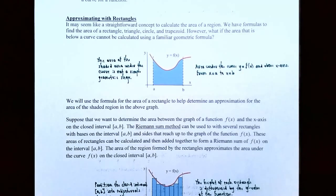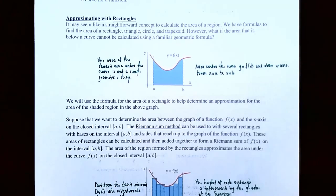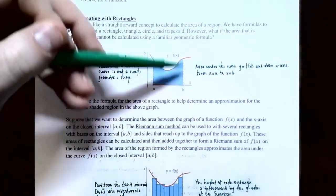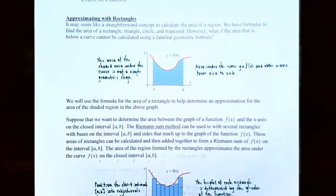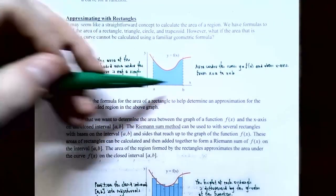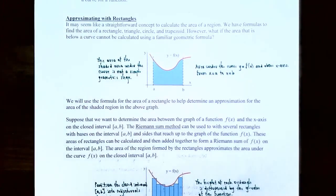Let's start off by talking about how to find the area under a curve using what's called approximation rectangles. It may seem straightforward to calculate the area of a region; however, we have formulas for rectangles, triangles, squares, circles, or trapezoids. But what do we do if the area below the curve cannot be calculated using a simple geometric formula? You start the area at x equals a and end at x equals b, giving you the boundaries, above the x-axis but below the curve. Notice that this region is not a geometric figure, so we can't use a geometric formula.